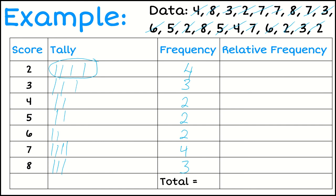So now to find my relative frequency, the first thing I need to do is total that all up. So if I add that up, 4 plus 3 is 7. 7 plus 2 is 9. 9 plus 2 is 11. And 2 is 13. And 4 is 17. And 3 is 20. So I've got a total of 20 pieces of data altogether.